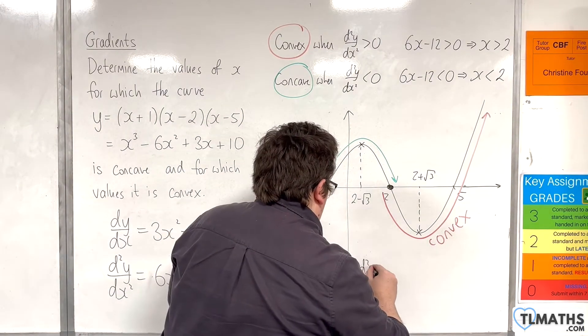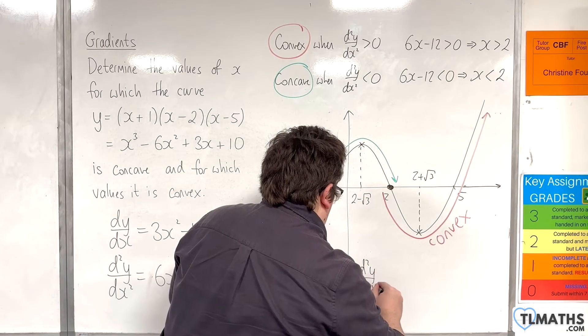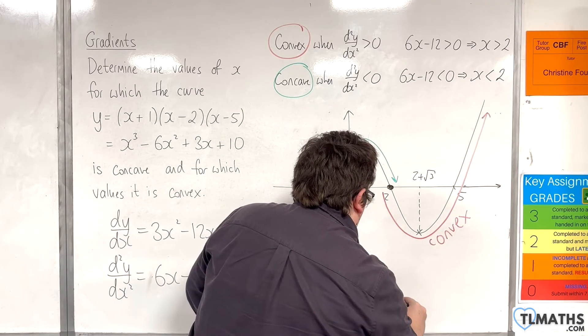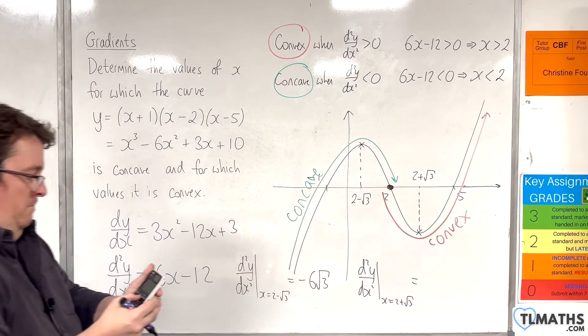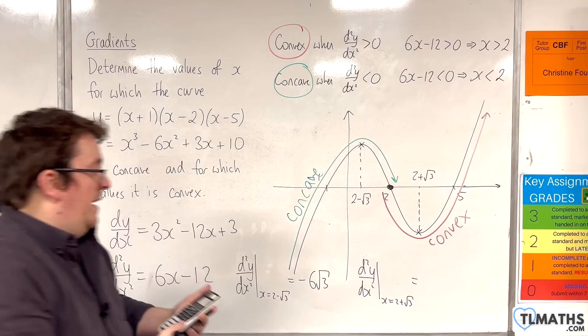And if you put the other stationary point in. So, 2 + √3. You get 6√3.